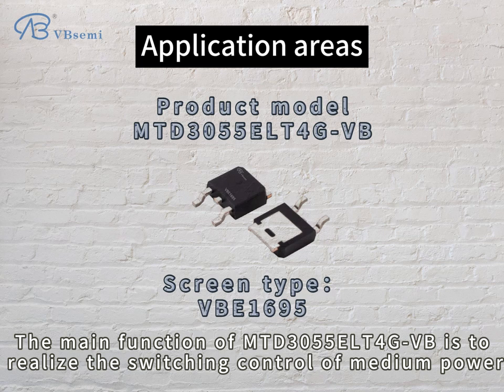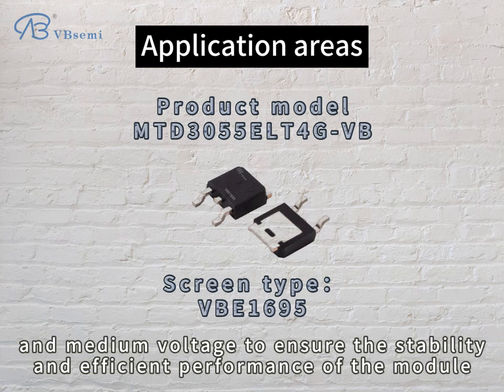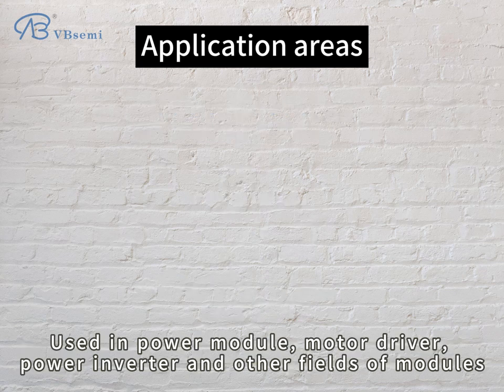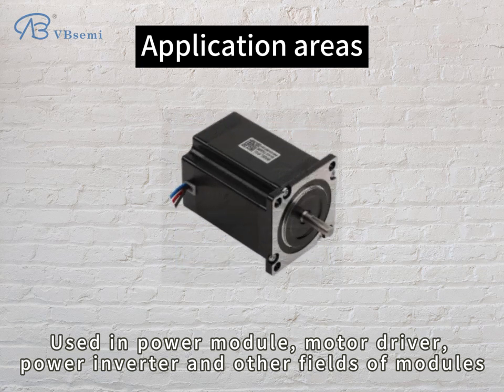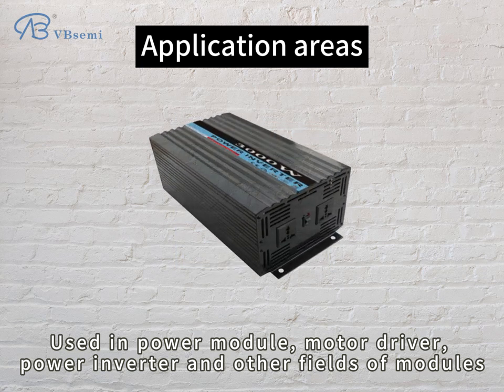The main function of the MTD3055 L4-GVB is to realize the switching control of medium power and medium voltage, to ensure stability and efficient performance of the module. It is used in power modules, motor drivers, power inverters, and other related fields.